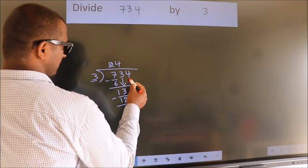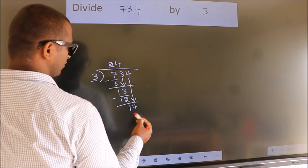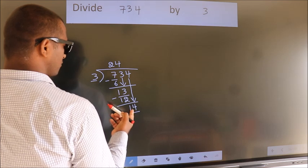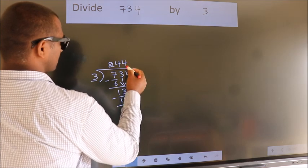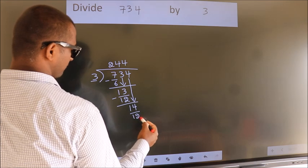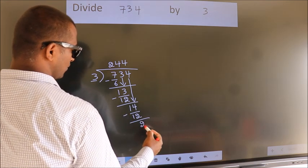After this, bring down the beside number. So, 4 down. So, 14. A number close to 14 in the 3 table is 3 times 4, which is 12. Now we subtract. We get 2.